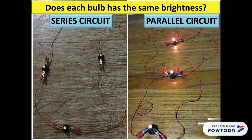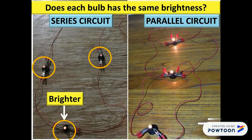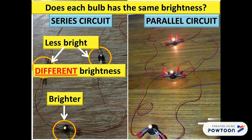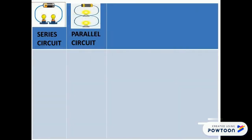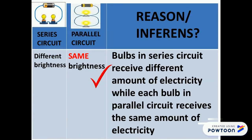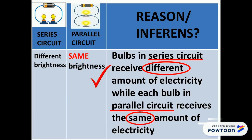The second difference is: which bulbs have the same brightness? As we can see here, one of the bulbs in a series circuit is brighter than the other two, which are less bright. This shows that the bulbs in a series circuit have different brightness, while all three bulbs in the parallel circuit each have the same brightness. The reason behind this is that bulbs in a series circuit receive different amounts of electricity, while each bulb in a parallel circuit receives the same amount of electricity.